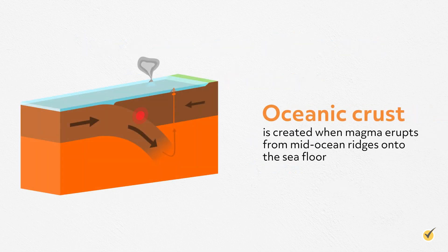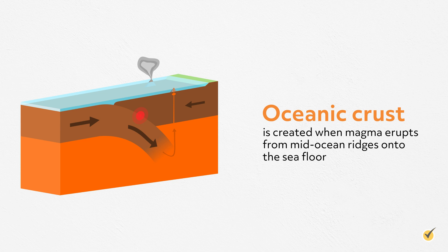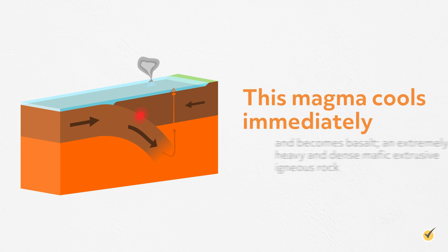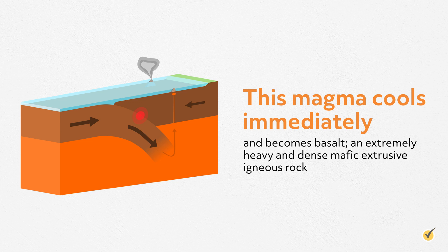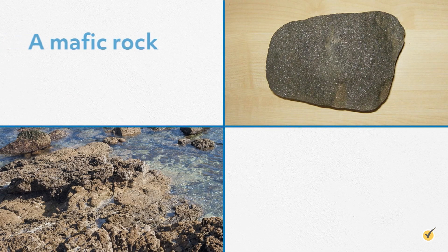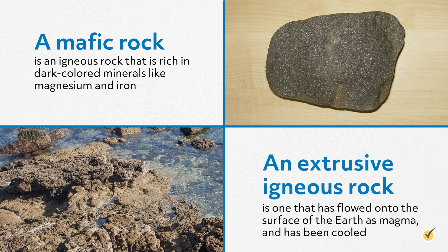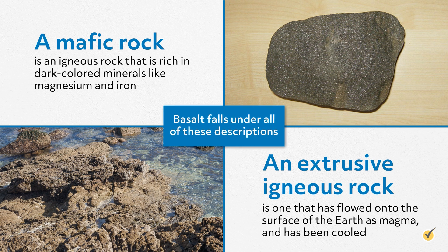Oceanic crust is created when magma erupts from mid-ocean ridges onto the seafloor. This magma cools immediately and becomes basalt, an extremely heavy and dense mafic extrusive igneous rock. A mafic rock is an igneous rock that is rich in dark-colored minerals like magnesium and iron. An extrusive igneous rock is one that has flowed onto the surface of the Earth as magma and has been cooled. Basalt falls under all of these descriptions.